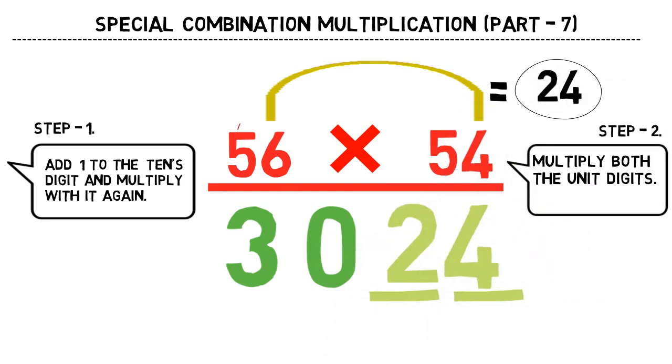Now one important thing you should not forget. Let's say we had 51 and 59, in that case the initial digits would have been 5 plus 1, 6, 6 into 5 is 30. But 1 into 9 would have become 09, okay? Because we need to write two digits after initial digits. You will get clarity on this when you practice these questions.